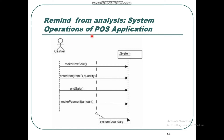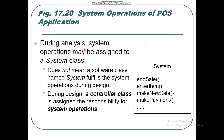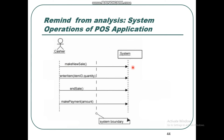As a reminder from analysis, the system operations of the POS application: the cashier initiates messages to the system — make new sale, enter item, end sale, make payment. All these messages go from cashier towards the system boundary. During analysis, system operations may be assigned to a system class, which acts as the controller class responsible here.